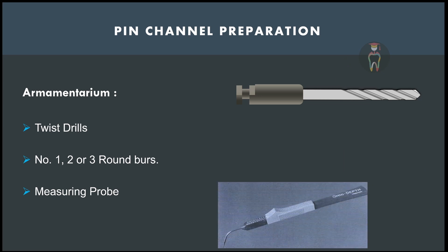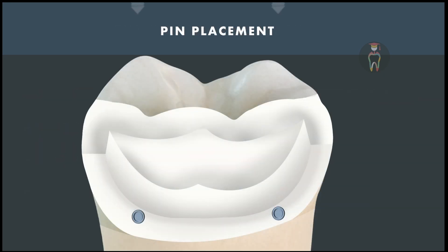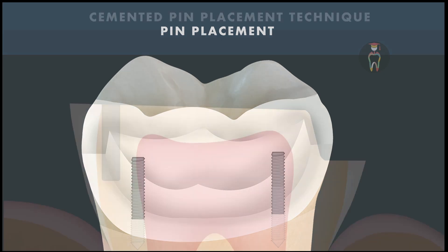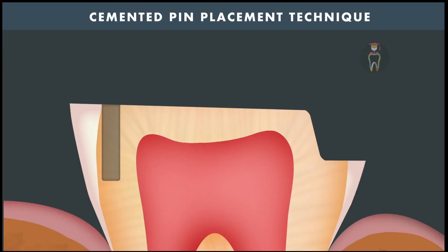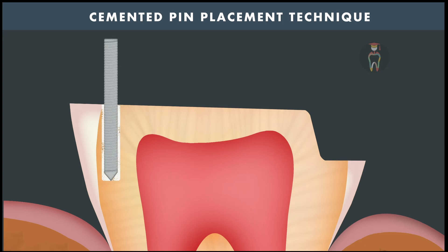The twist drill must be chosen depending on the type and size of the pin — the exactly corresponding size of twist drill must be selected. After preparing the pin channel, a measuring probe called the omni depth gauge is used to measure the depth of the channel. For a cemented pin, the pin channel is coated with luting cement using a lentulo spiral in a slow-speed handpiece, then the cemented pin is placed passively and the cement is allowed to set.